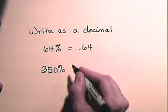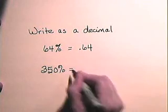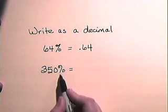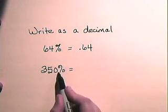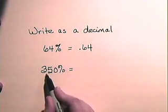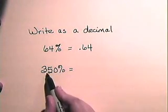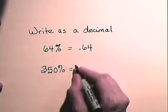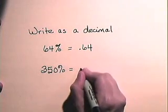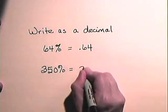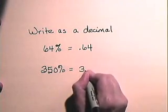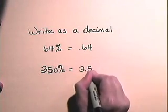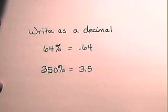Three hundred and fifty percent — we remove the percent sign and move the decimal two places to the left — so three hundred and fifty percent becomes 3.5, or three and one-half.